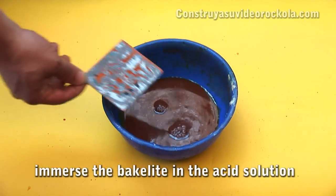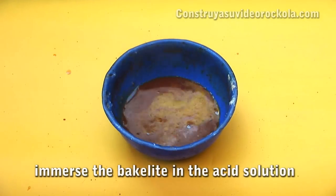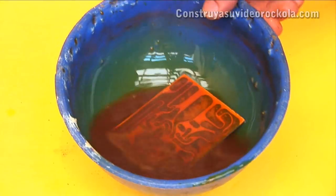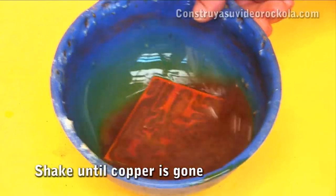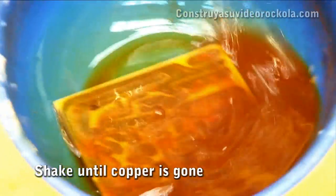Gently shake for the time necessary to remove the ferric chloride copper in areas not covered by the ink. We see the printed circuit appears and the excess copper disappears.